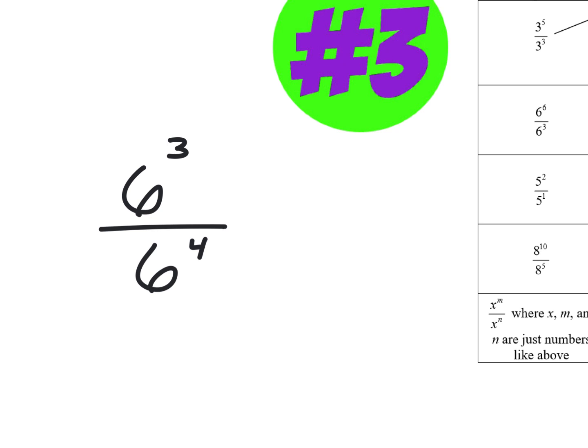Let's say I had six to the third over six to the fourth. That starts messing with your head because you know you're supposed to subtract them. But is the answer just six to the one? No. No it's not. Six to the what? And if you remember what I said about that, you'd know the answer. One sixth. There you go.